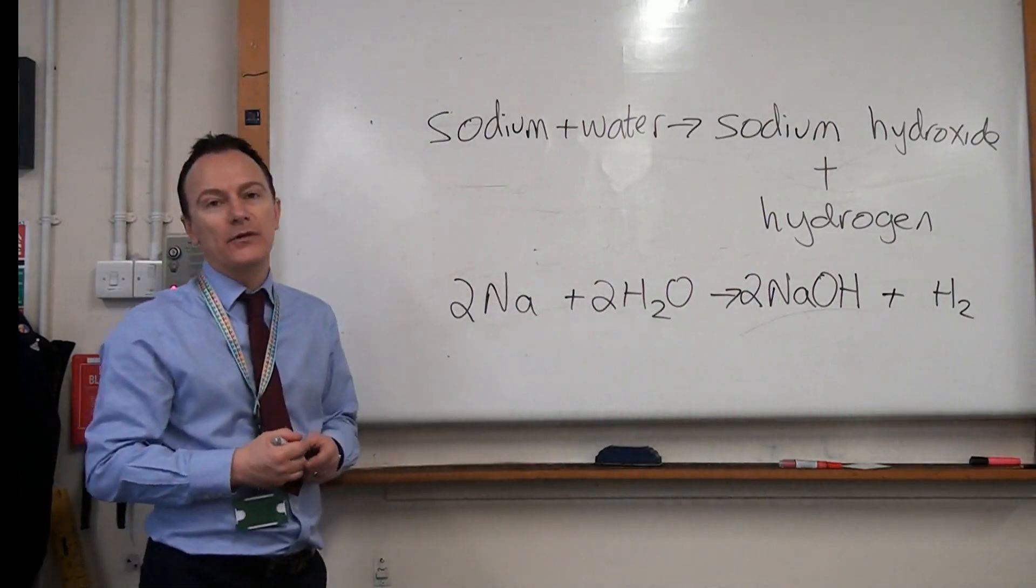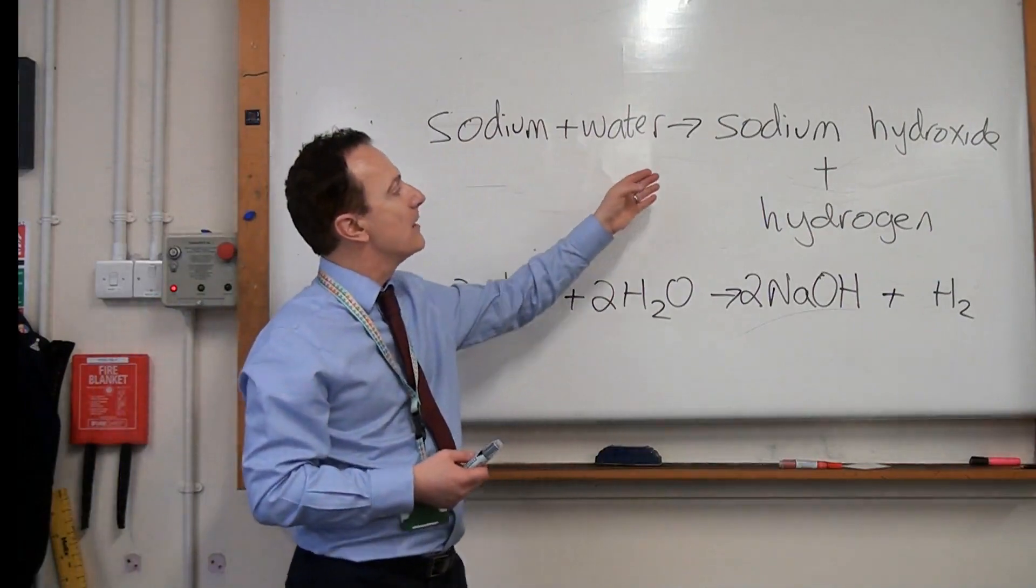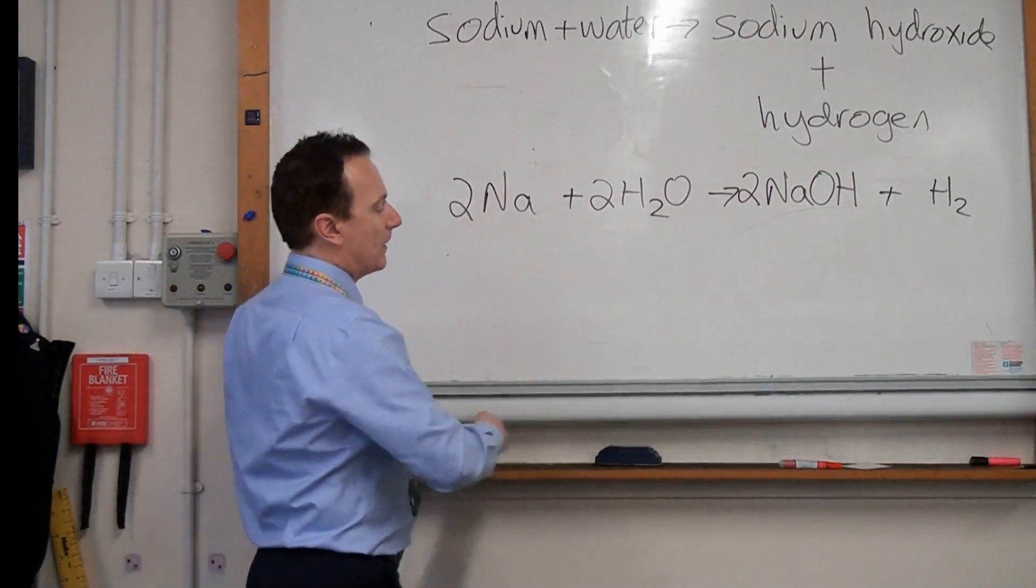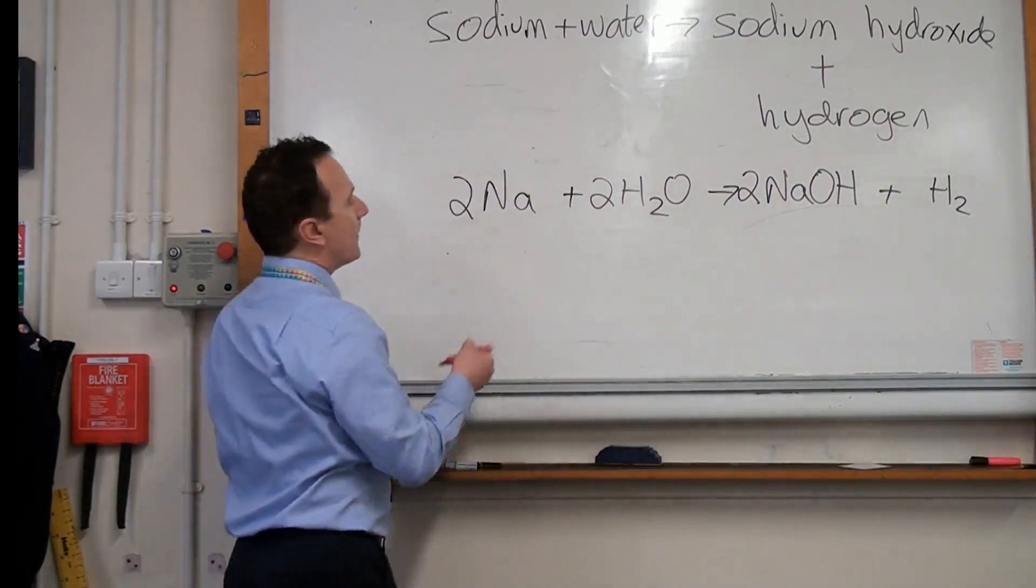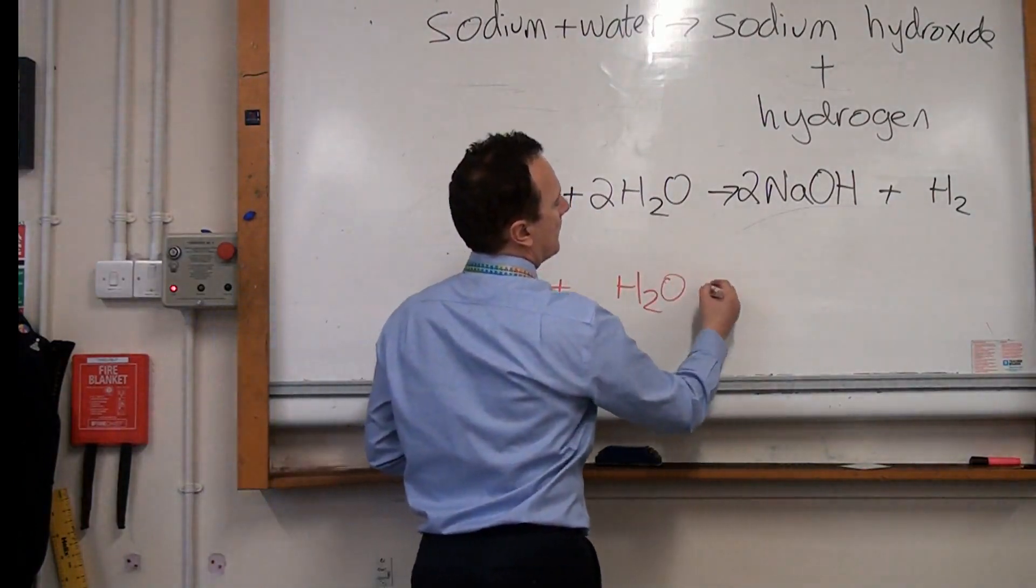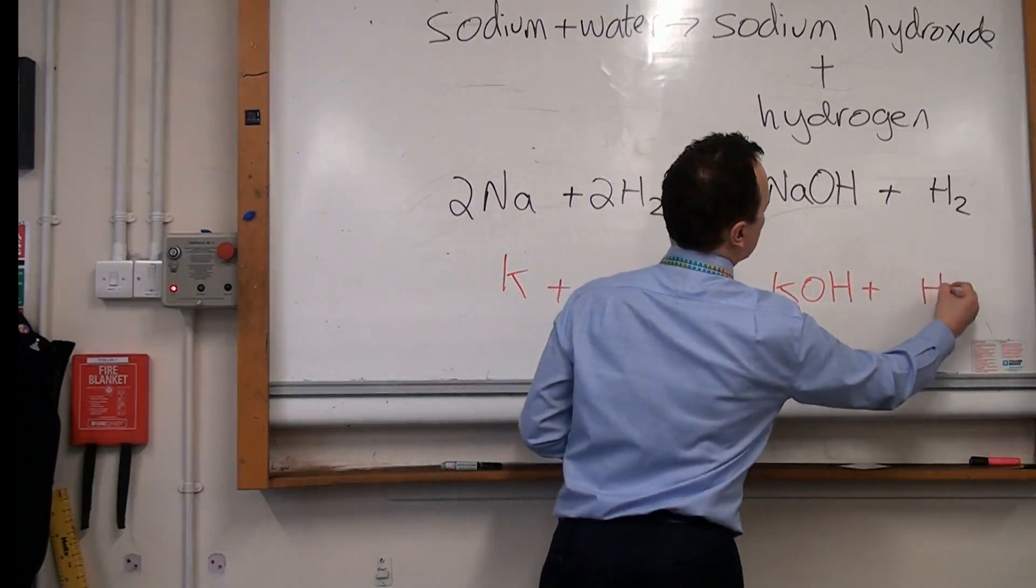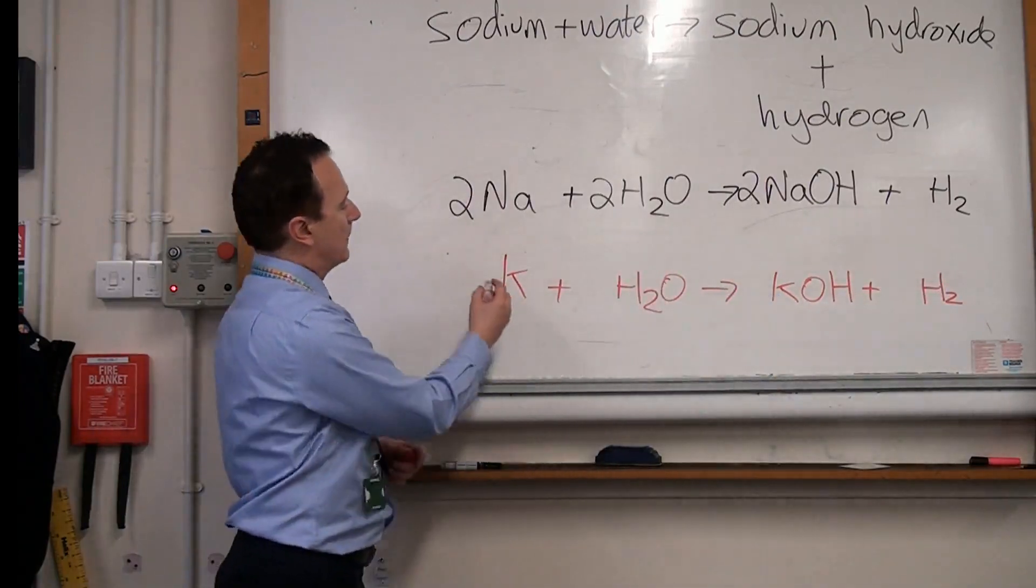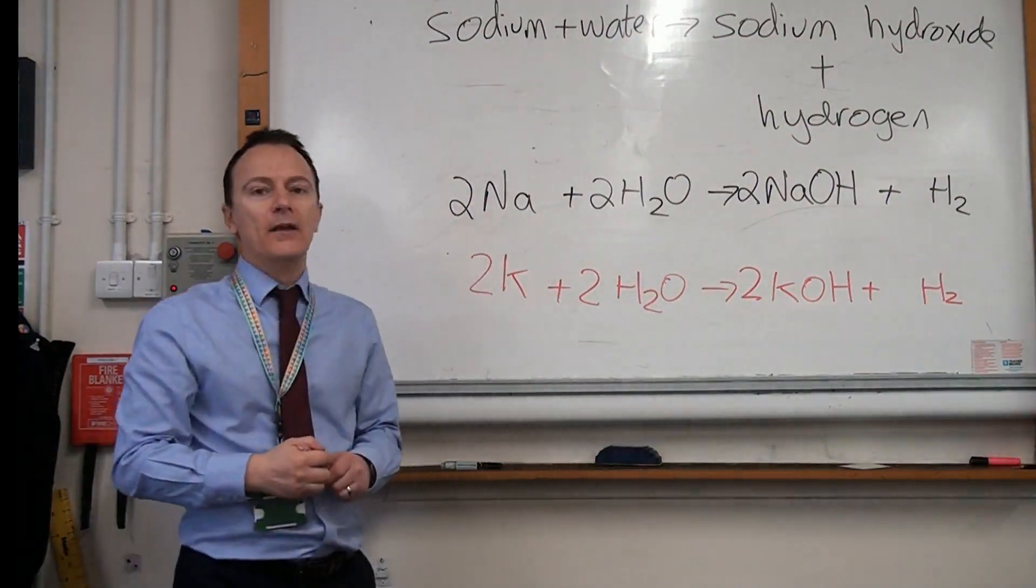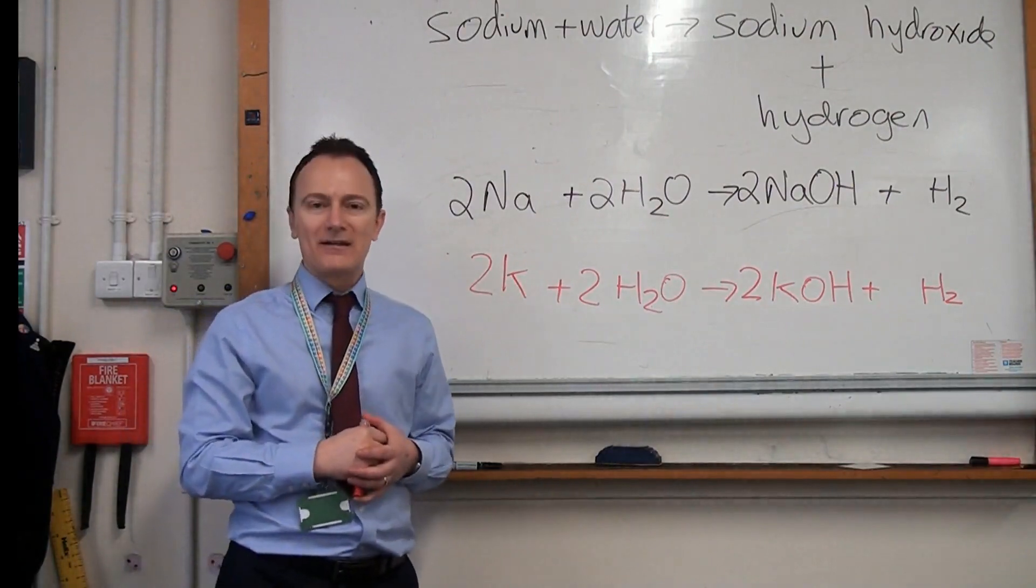Now if the question instead was potassium, then it would be exactly the same. Potassium plus water makes potassium hydroxide and hydrogen, and once again to balance it, we would need a 2 in these positions here. So stay watching for that all-important summary of everything we've learned so far about the alkali metals.